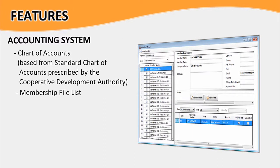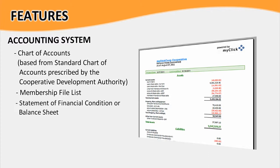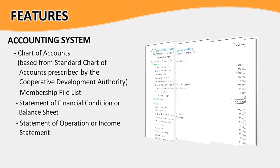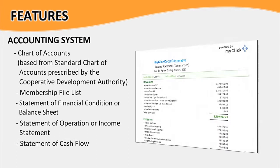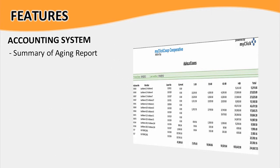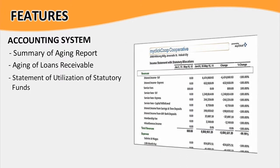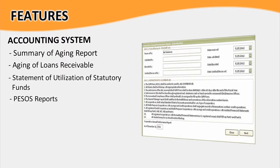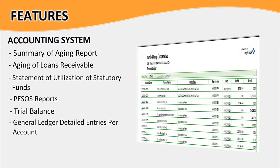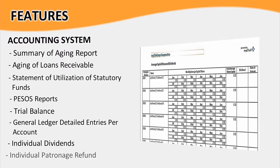The Accounting System uses a Chart of Accounts based on the Standard Chart of Accounts prescribed by the Cooperative Development Authority. Available reports include Membership File List, Statement of Financial Condition (Balance Sheet), Statement of Operation (Income Statement), Statement of Cash Flow, Summary of Aging Report, Aging of Loans Receivable, Statement of Utilization of Statutory Funds, Peso Reports, Trial Balance, General Ledger, Detailed Entries Per Account, Individual Dividends, and Individual Patronage Refund.